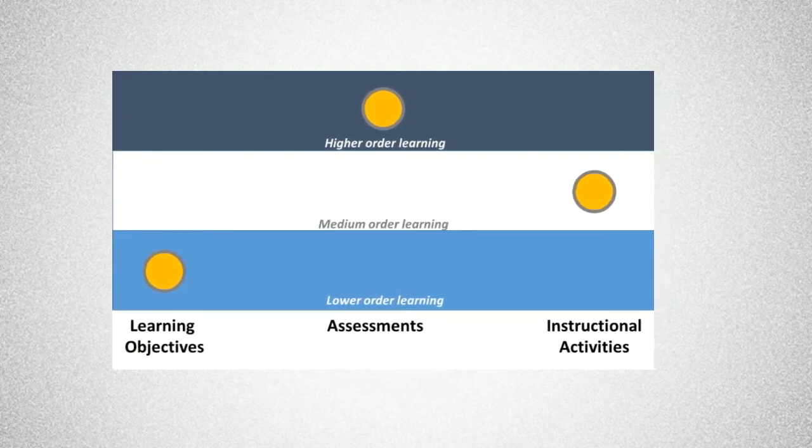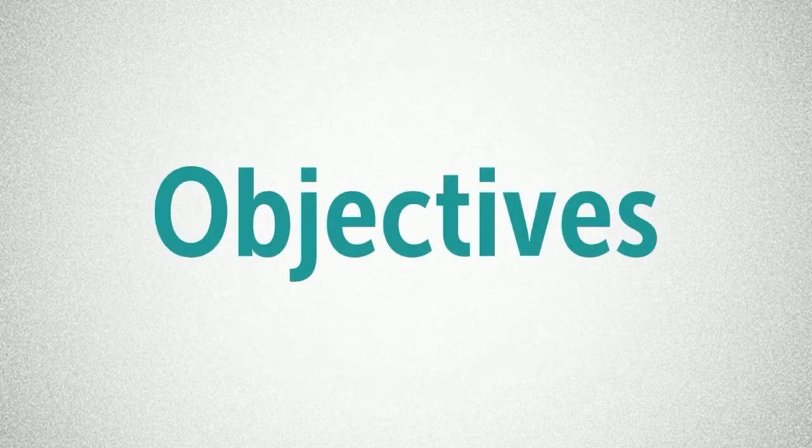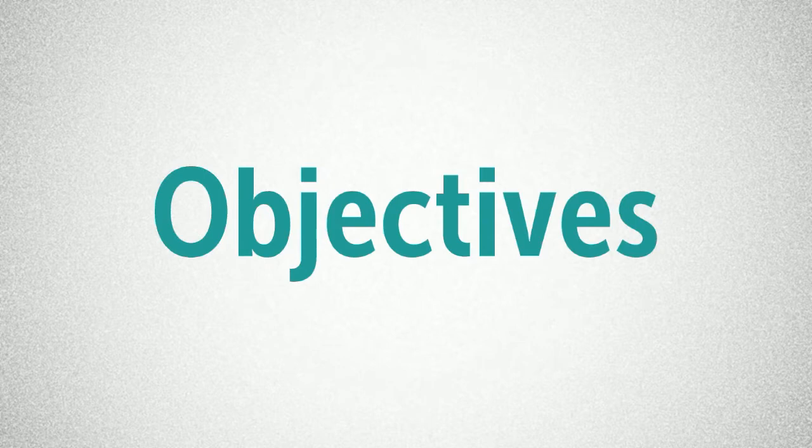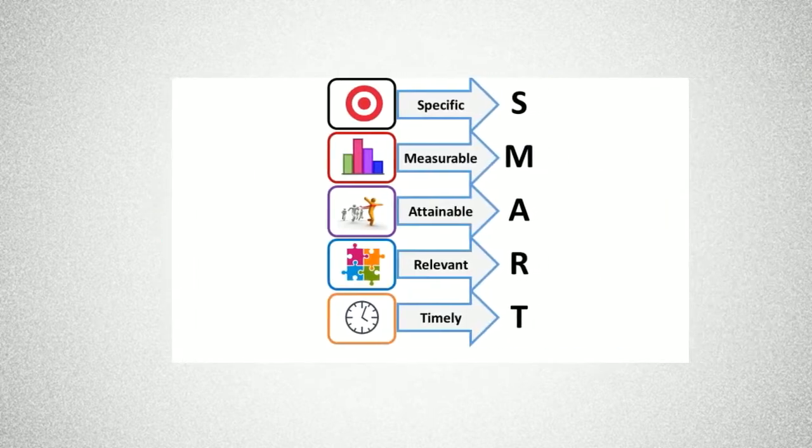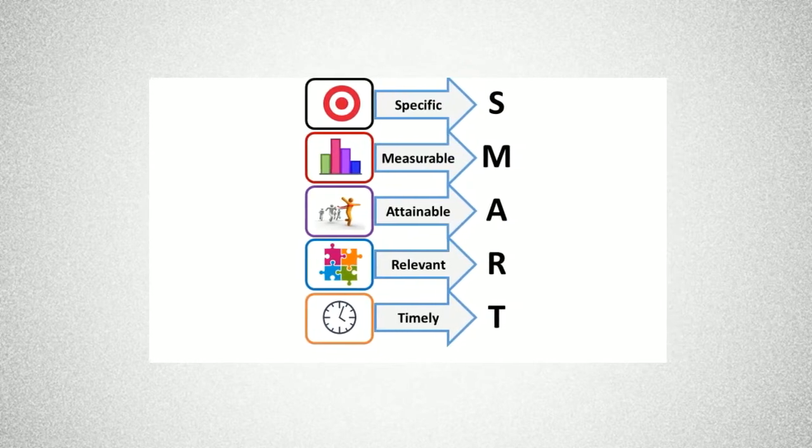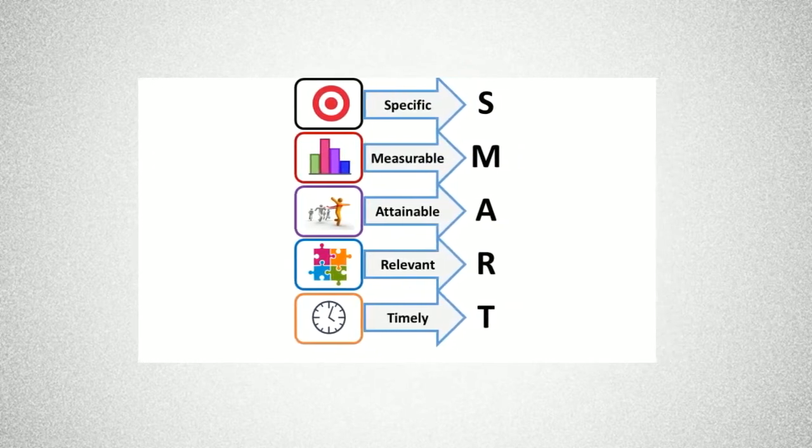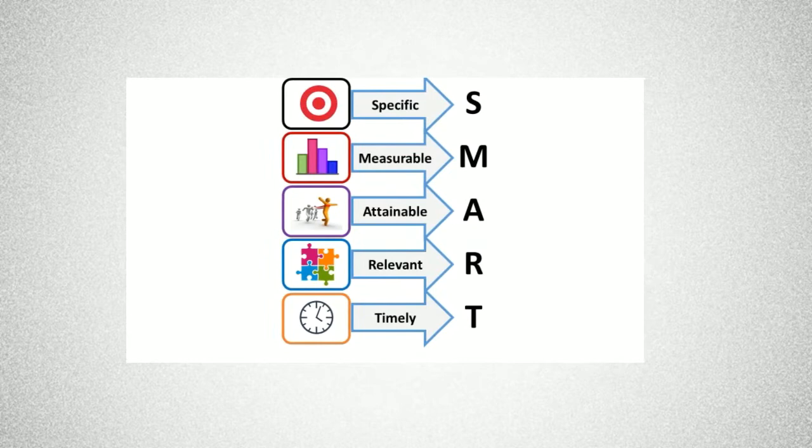So, how do we align our instruction? The how of instructional alignment starts with objectives. Objectives can vary from content to skills to attitudes and behaviors. In any case, two common formats exist for writing objectives. The first common format is SMART objectives, or specific, measurable, attainable, relevant, and timely.